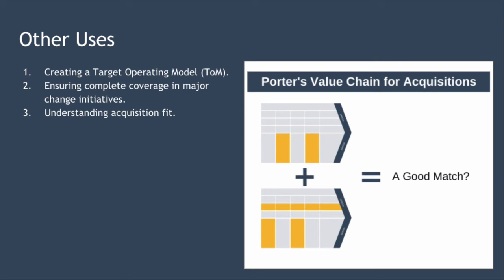The value chain is a powerful strategic tool, and you can use it for more than just creating an understanding of how your organization generates value. This includes creating a target operating model — you can use it to design how and where you would like to add value to your chain in the future. Your target operating model can act as a blueprint of where you want to get to. For example, consider a car manufacturer such as Volkswagen moving towards fully electric cars — they probably have some target operating model of where they want to get to and move step by step towards that model. Another way to use it is in ensuring complete coverage in major change initiatives. If you're planning a large-scale change program of work, you can use your value chain as a checklist to ensure you've considered the implications for all activities and all the links between activities within your organization.